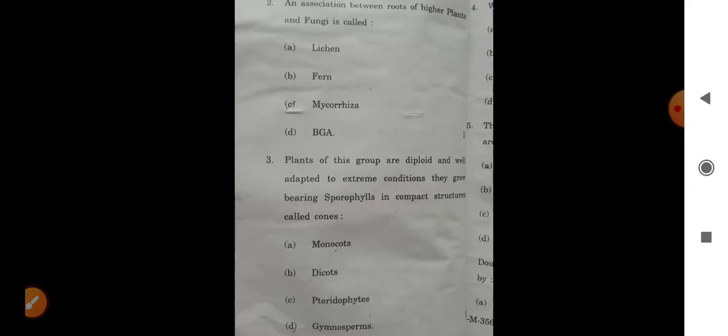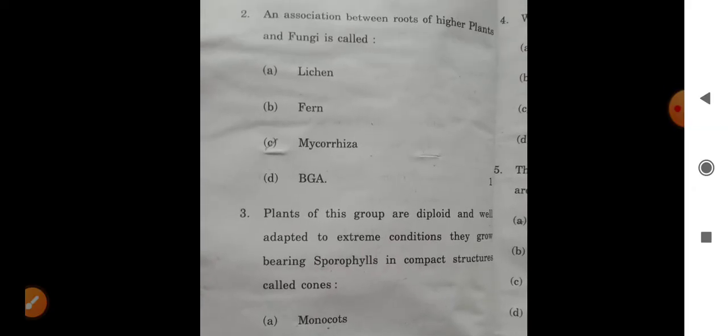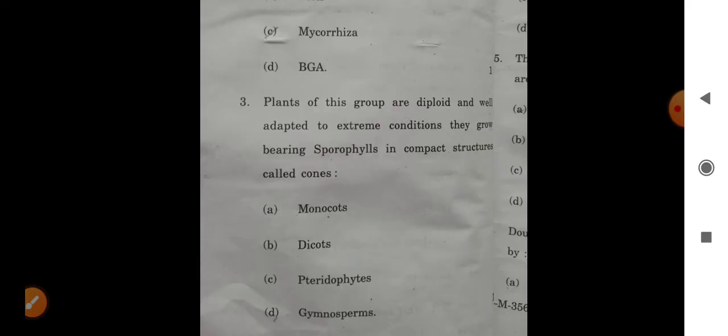The first question is the five kingdom system of classification was given by, the association between root of higher plant and fungi is called, plants of this group are diploid and well adapted to extreme conditions. They grow bearing sporophylls in compact structures called cones.